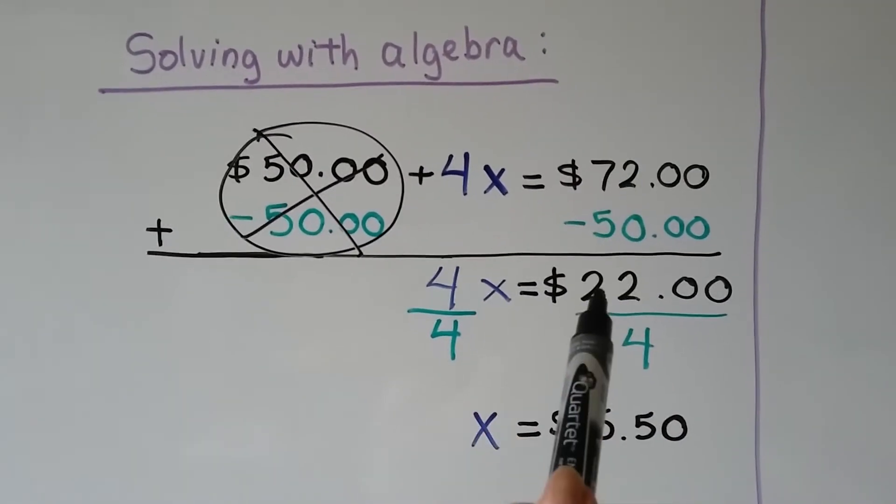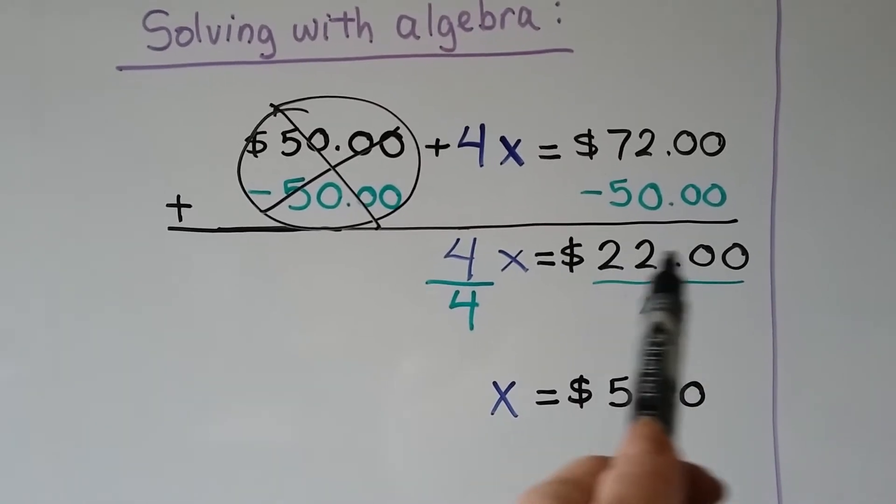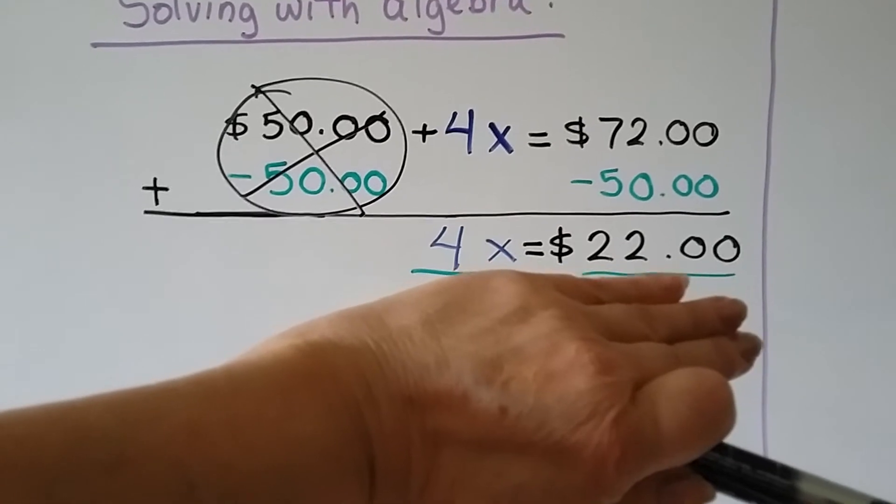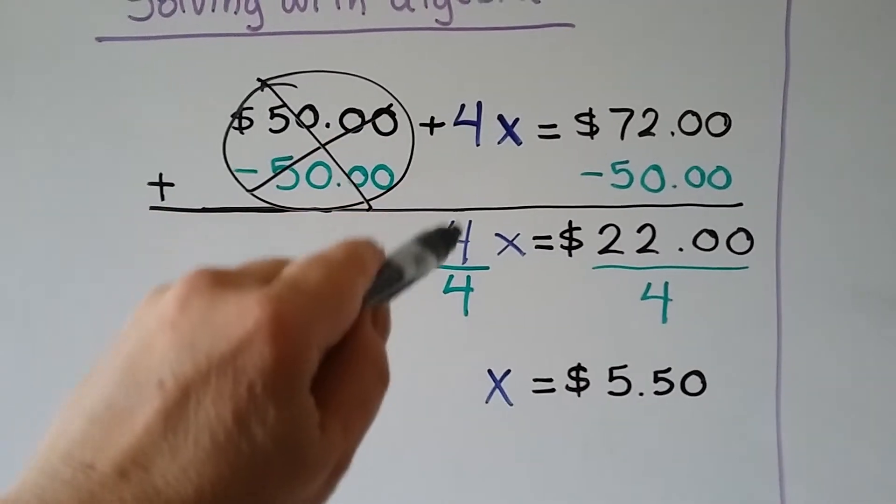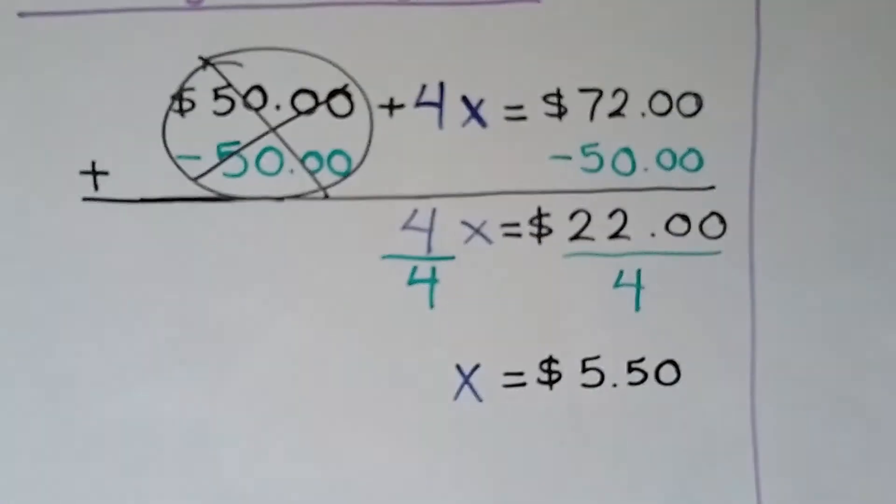On this side, when we do our math, we get $22. 72 minus 50 is 22. We drop down the 4x. Now we have 4x equals $22.